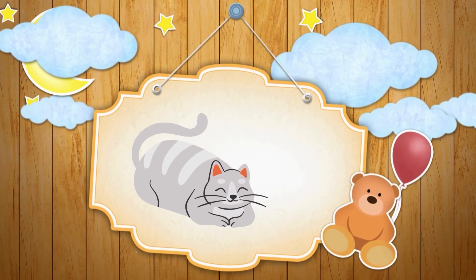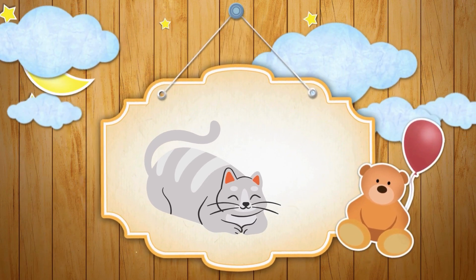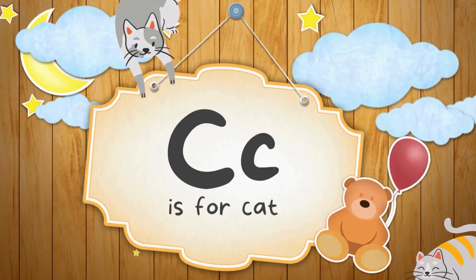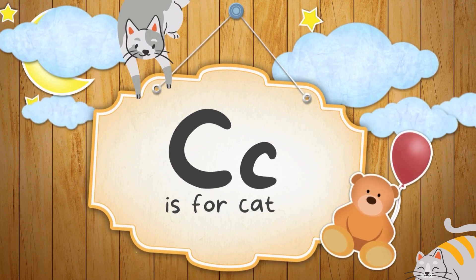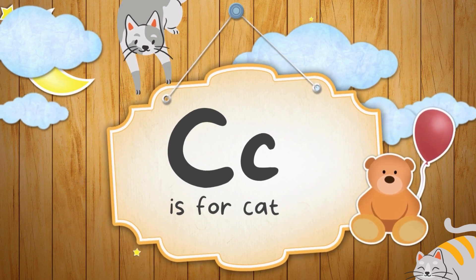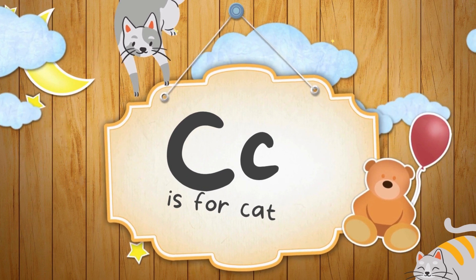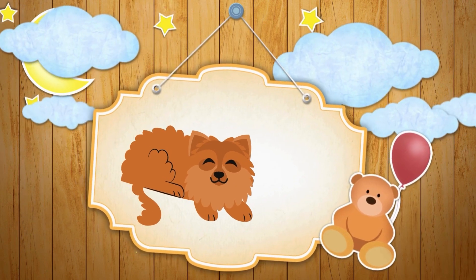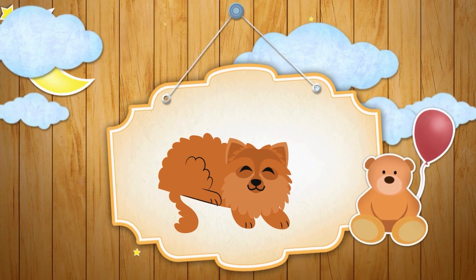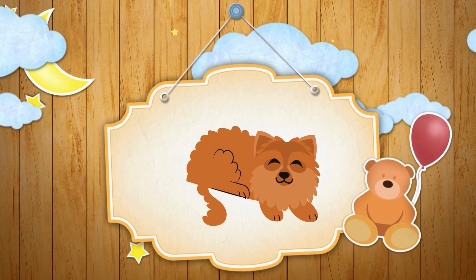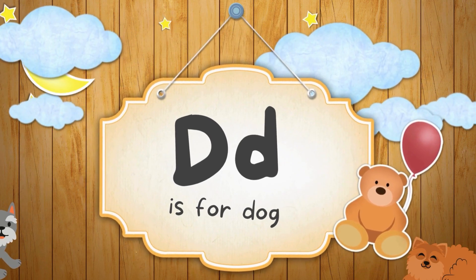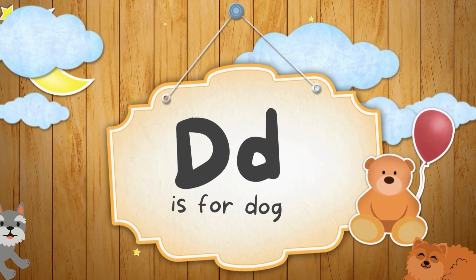See the image and guess the alphabet. C is for Cat. See the image and guess the alphabet. D is for Dog.